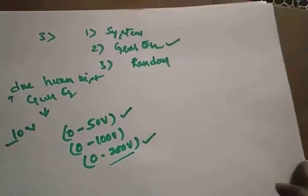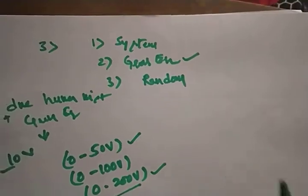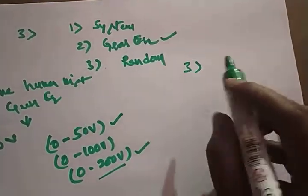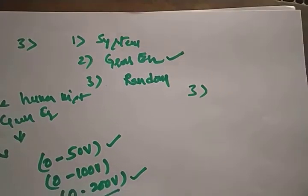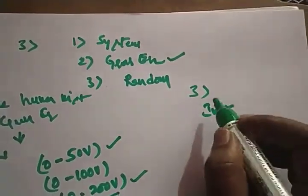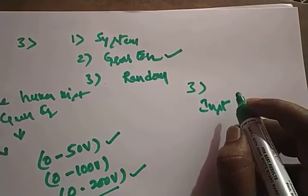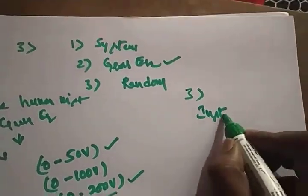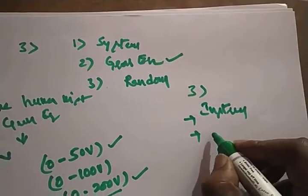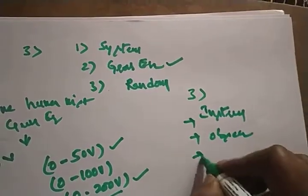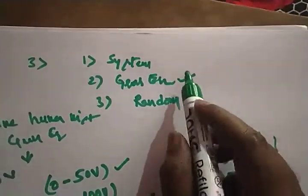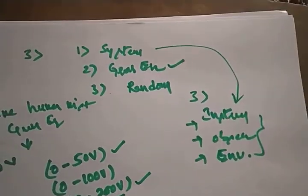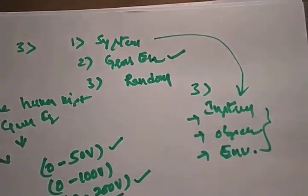After gross errors, what are systematic errors? There are three types of systematic errors, which we discussed in the last session. Those are: instrumental errors, observational errors, and environmental errors. So gross errors are due to human mistakes, and systematic errors consist of instrumental, observational, and environmental errors.